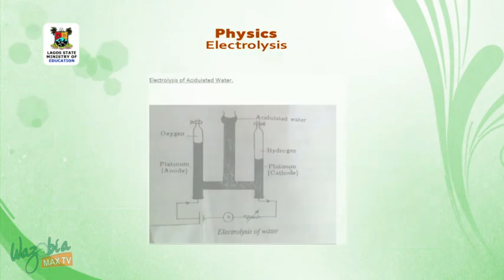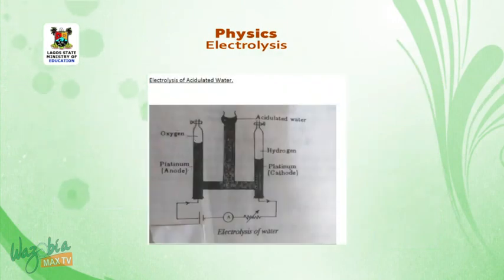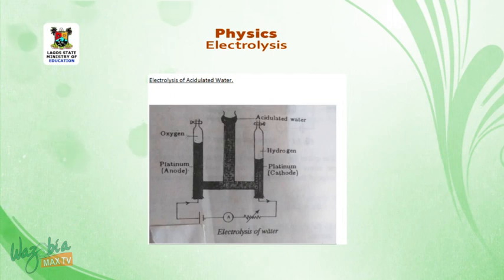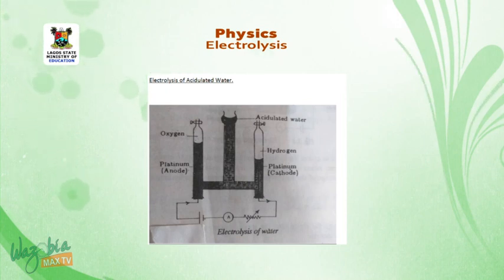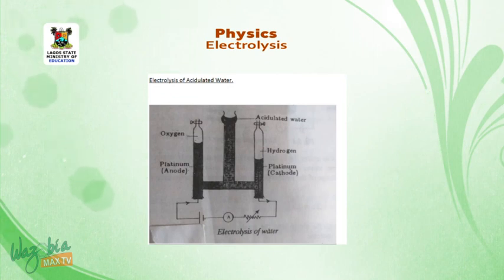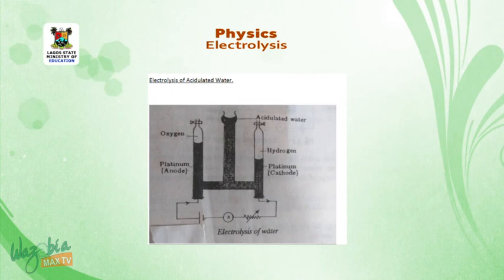Electrolysis of acidulated water: go through the diagram below. On the left side, you have platinum — the anode. On the right side, you also have platinum, which is the cathode. The whole circuit is connected as shown in the diagram.